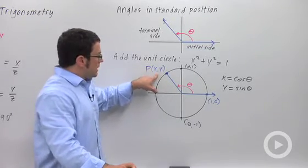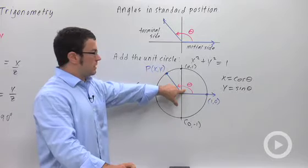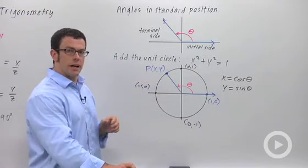This point, of course, will be unique. It'll depend uniquely on the angle theta. So for different angle thetas, you're going to get different sine and cosine values.